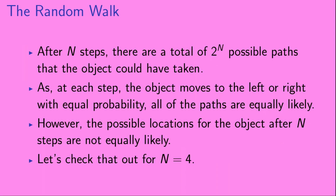After n steps, there are a total of 2 to the n possible paths that the object could have taken. As at each step the object moves to the left or right with equal probability, all of the paths are equally likely. However, the possible locations for the object after n steps are not equally likely.